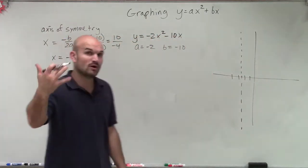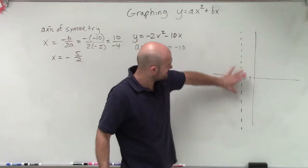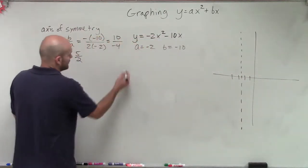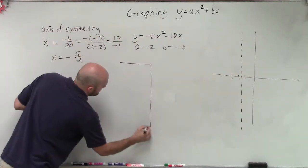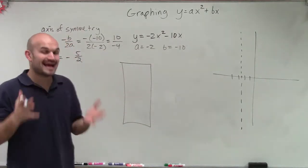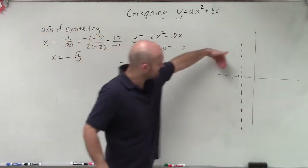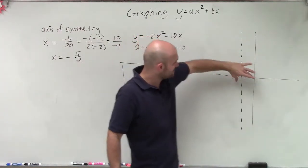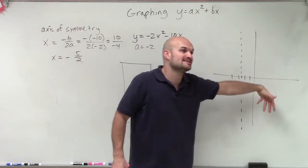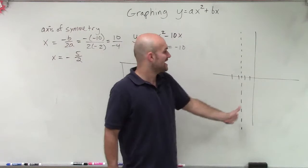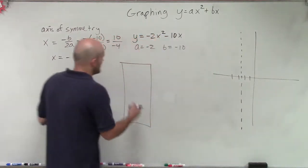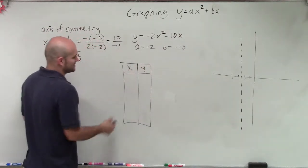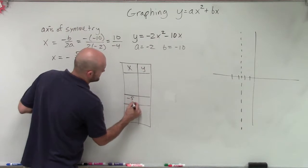One thing we'll work on next is using this axis of symmetry to find points on one side, and then we can just reflect them over. So let's go ahead — we know that points on the axis of symmetry reflect over each other. If I can find the points to the right, I can just reflect them over my axis of symmetry and they'll be the exact same points. So our axis of symmetry is at negative 5 halves.